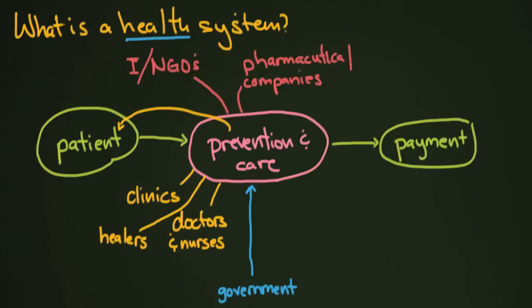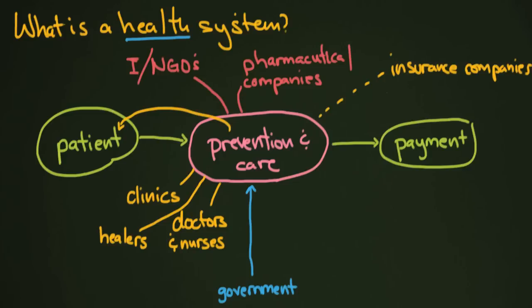You also have insurance companies, which came up at some point, and in certain countries are a very strong component of the entire system — a very deciding factor in all of this. They are sometimes directly related to prevention and care, although I should make that a dotted line because that's not always the case. They're always involved in payment because that's essentially what they were built to do — insurance companies were built to pay for these problems. They are directly related to the patient, their customer, and the patient pays the insurance company and the insurance pays for the care, although not completely and entirely.